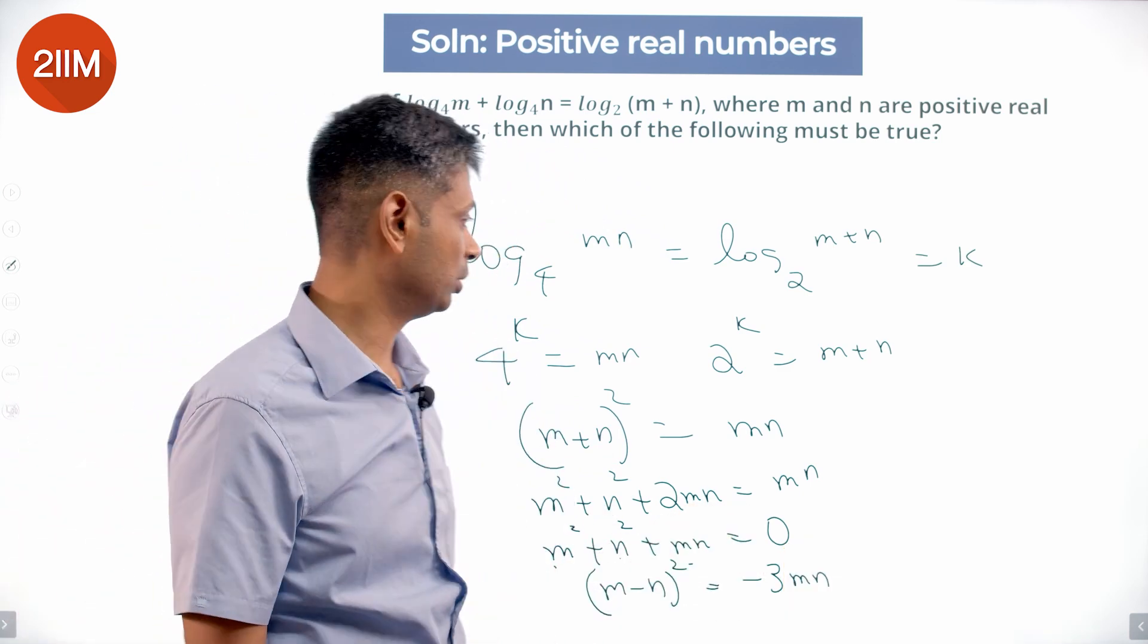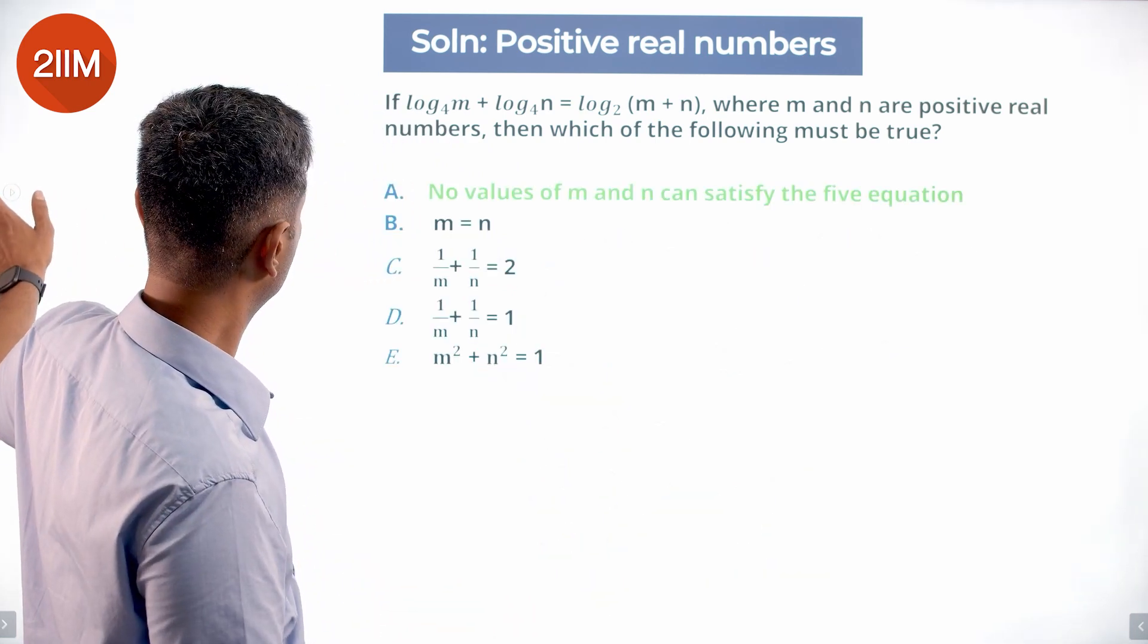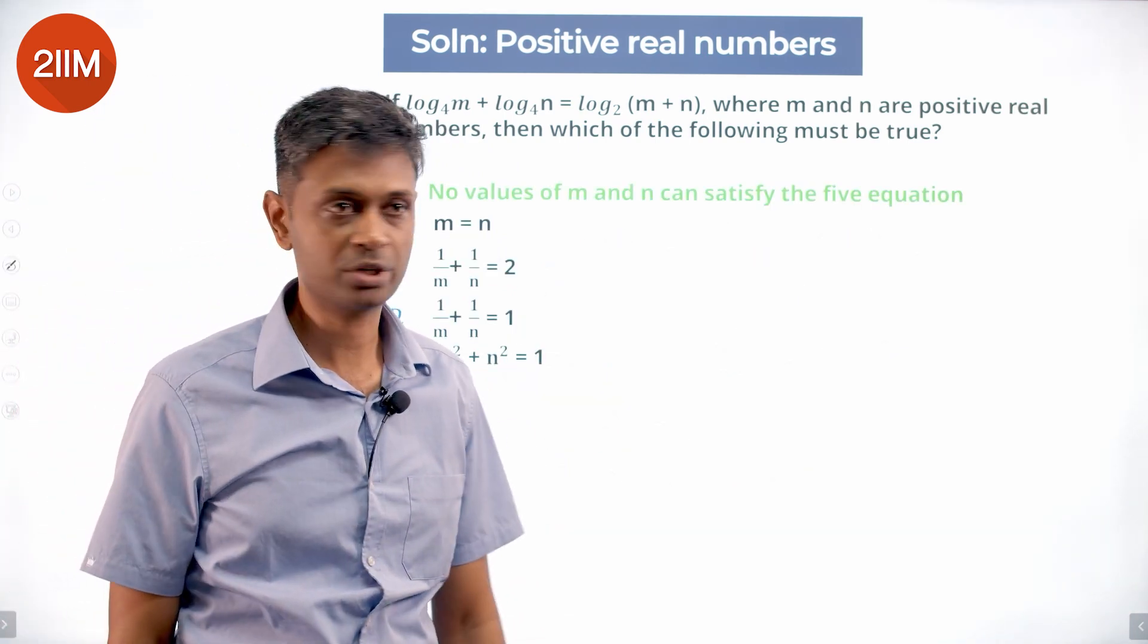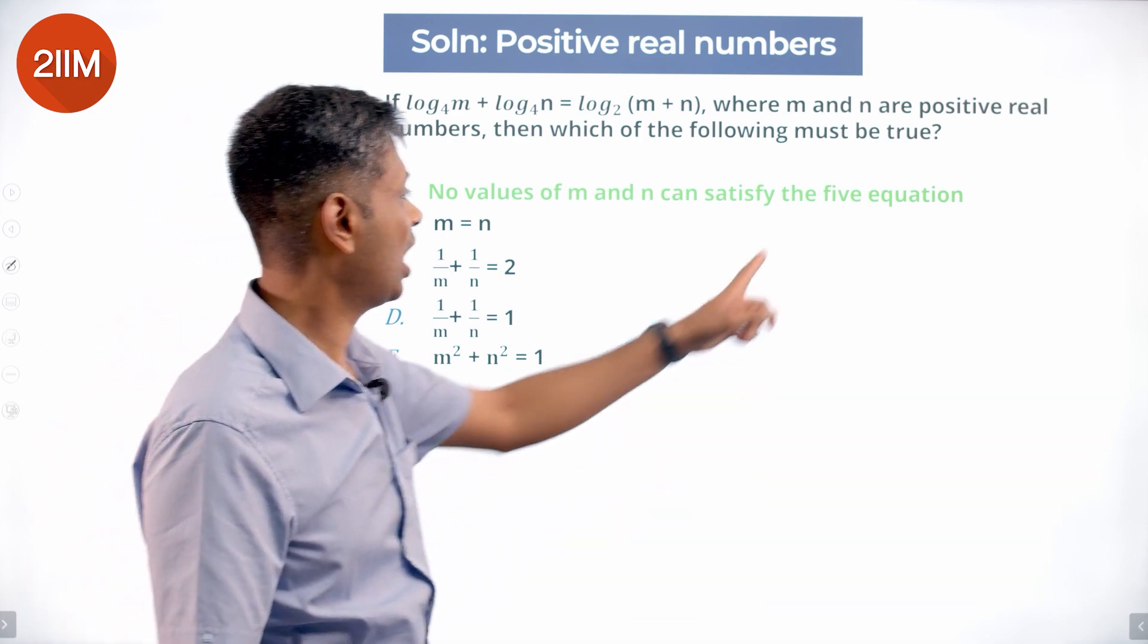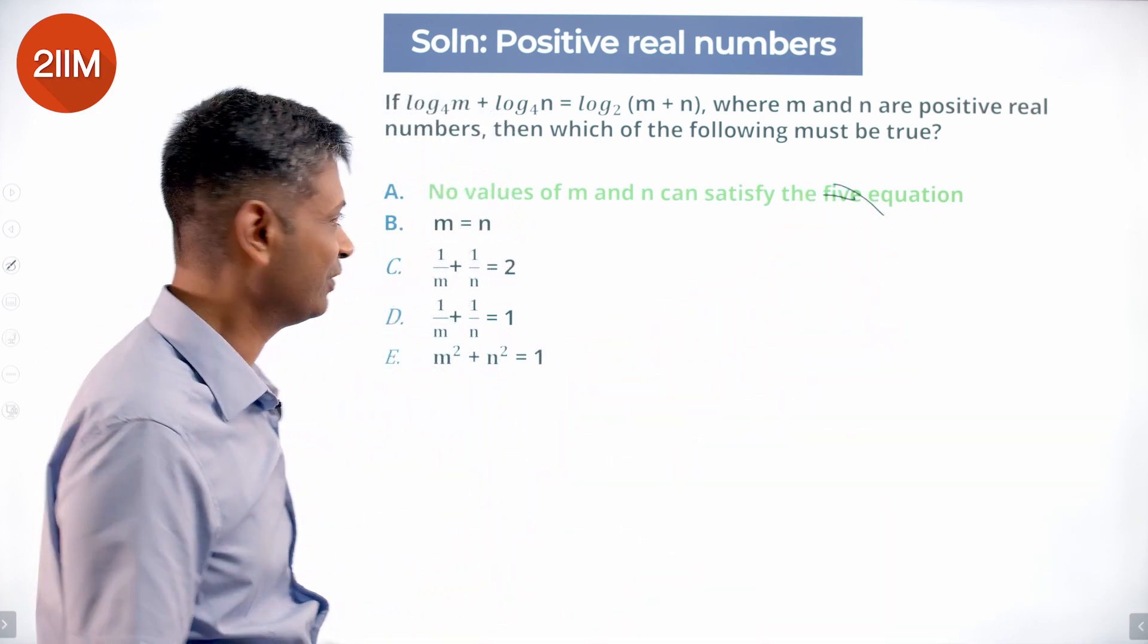This is a perfect square, so greater than or equal to 0. That side is negative, which is simply not possible. So no values of m and n satisfy this equation.